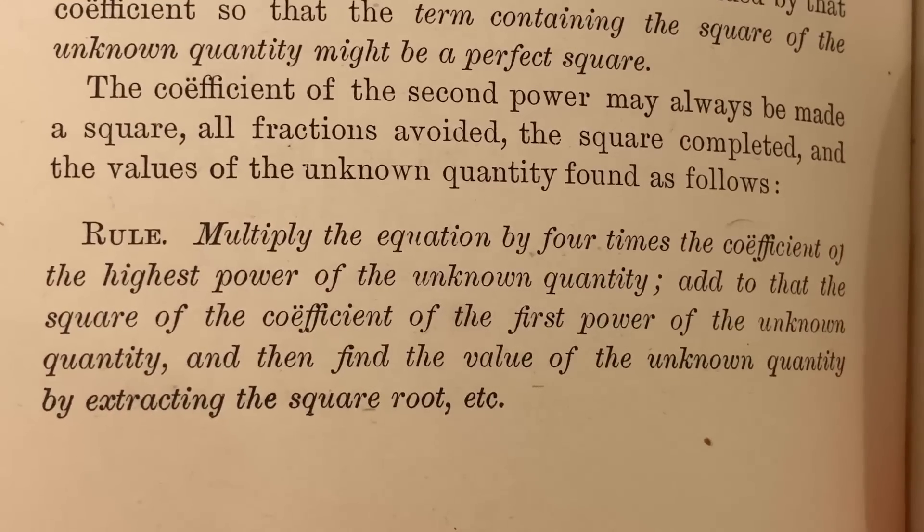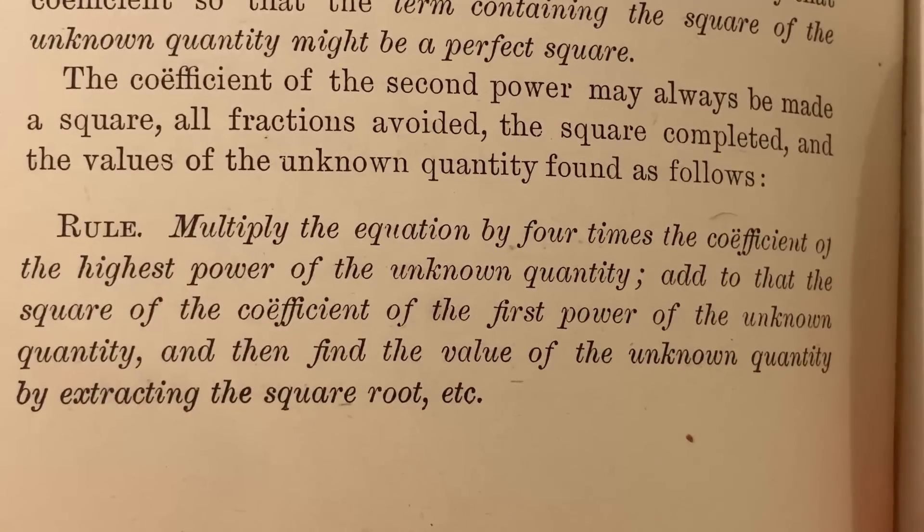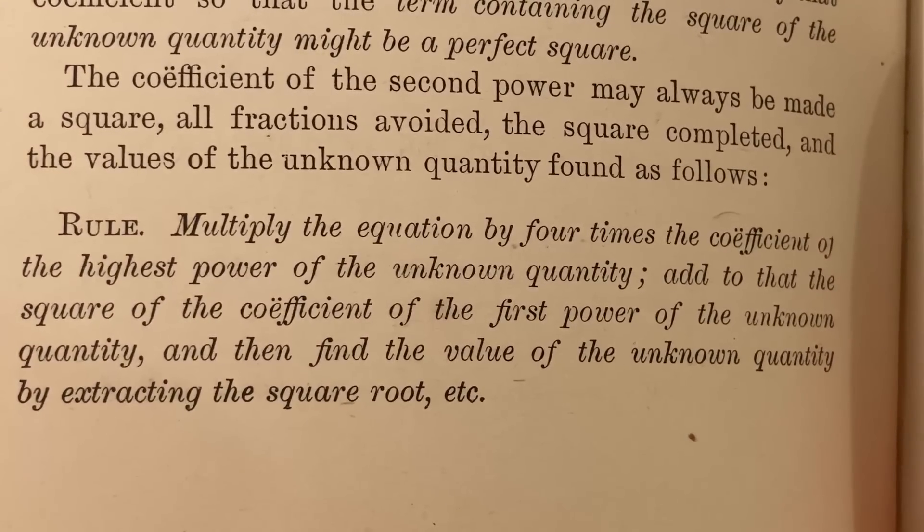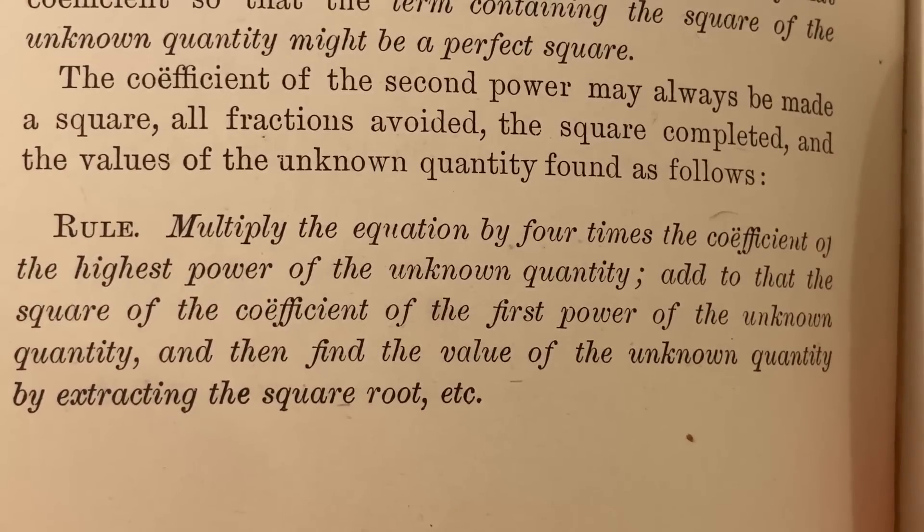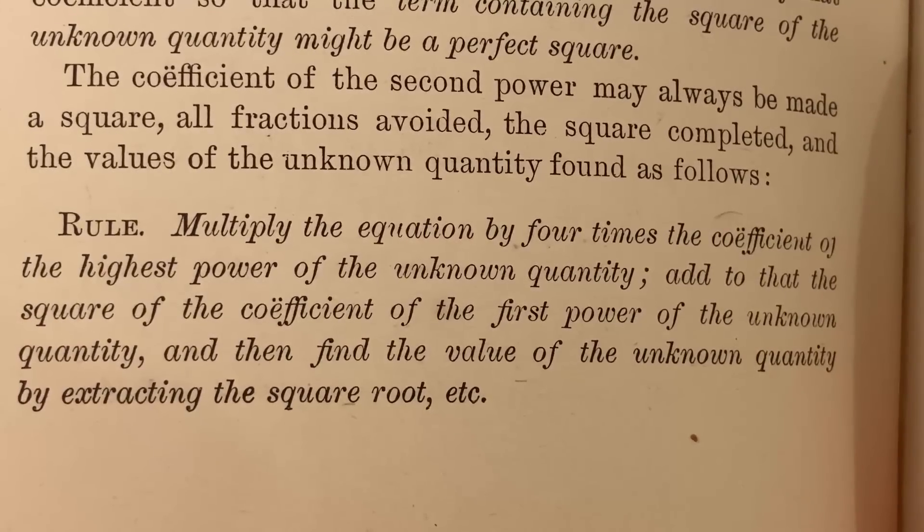Here is the rule as it is explained in the book. Multiply the equation by 4 times the coefficient of the highest power of the unknown quantity. Add to that the square of the coefficient of the first power of the unknown quantity. And then find the value of the unknown quantity by extracting the square root.